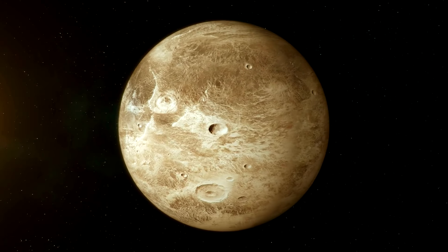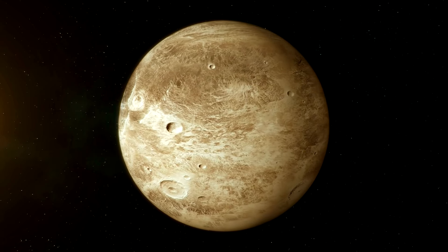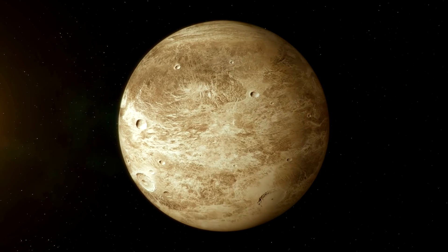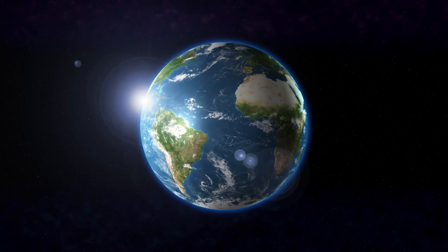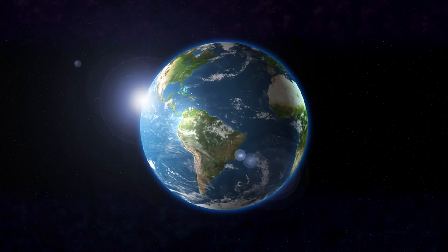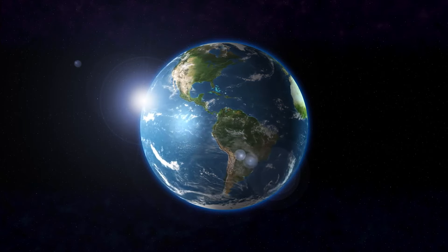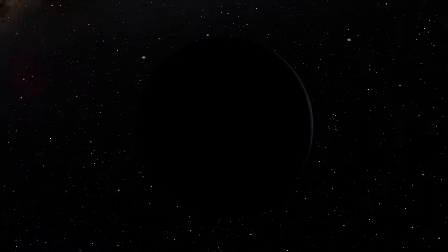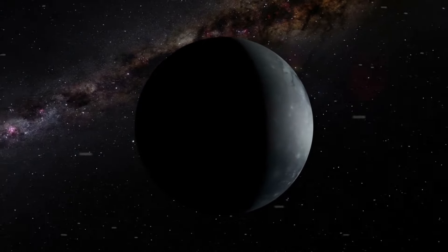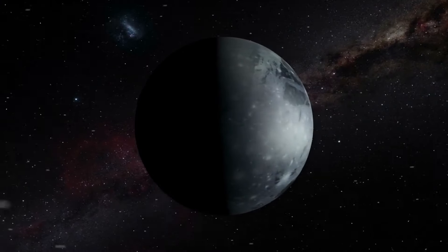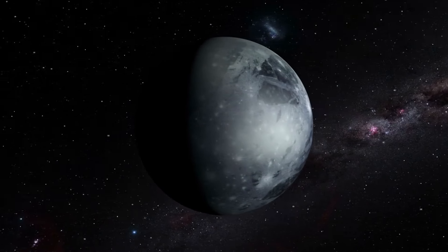Pluto's thin atmosphere is also subject to occasional phenomena like winds and weather patterns, albeit much more subdued than what we experience on Earth. The temperature gradients created by the interaction of sunlight with the surface and the atmosphere can drive gentle winds across the dwarf planet's icy plains. These winds can transport surface material, potentially contributing to the formation of features like dunes or streaks seen on some of the higher resolution images of Pluto's surface.